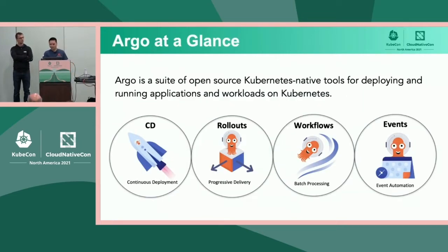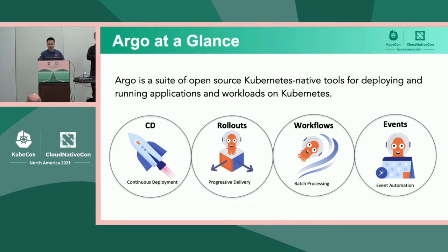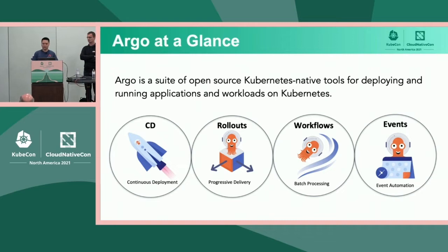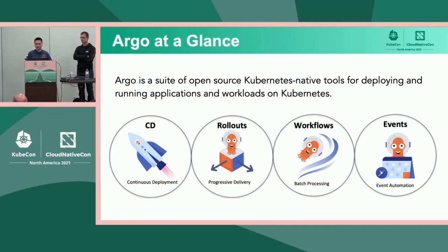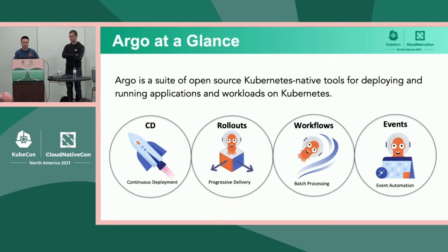Before we get into it, it's always useful to explain what the Argo project is at a high level. Argo is a collection of Kubernetes-native tools all focused on the area of application delivery. It's comprised of four main projects: CD, Rollouts, Workflow, and Events. Each project is focused on a specific use case and they're all designed to be used standalone with loose integrations between the projects.